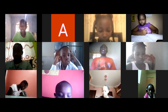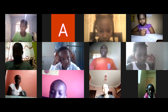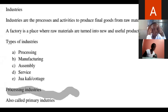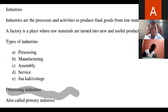In our next lesson, we are going to cover the four major industries in Eastern Africa in detail. To summarize: industries are the processes and activities to produce final goods from raw materials, while a factory is where raw materials are turned into new and useful products. The types include processing industry, manufacturing industry, assembly industry, service industry, and cottage industry.